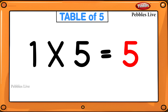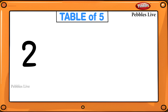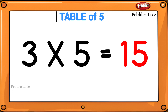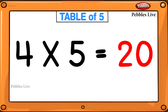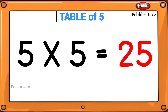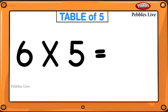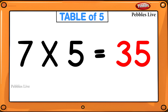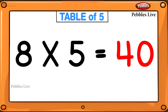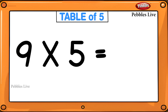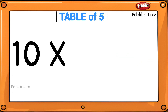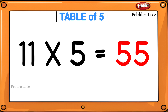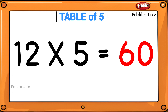1 five is 5, 2 fives are 10, 3 fives are 15, 4 fives are 20, 5 fives are 25, 6 fives are 30, 7 fives are 35, 8 fives are 40, 9 fives are 45, 10 fives are 50, 11 fives are 55, 12 fives are 60.